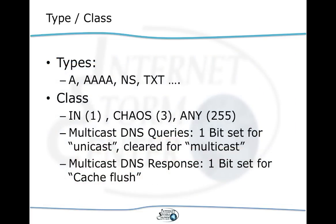For types, we have A for an IPv4 address, AAAA for an IPv6 address, NS for name server records, TXT for text records, and many others including MX records for mail servers and SRV service records. As far as classes are concerned, in multicast DNS you should really only see the internet class, which is class number one.